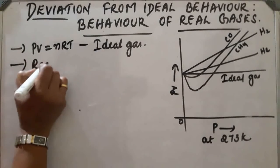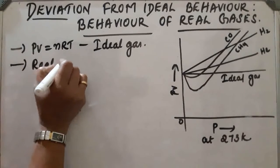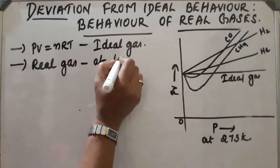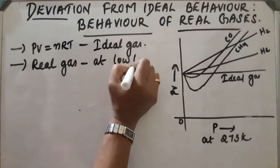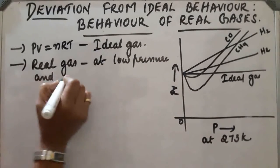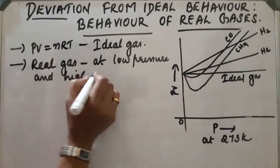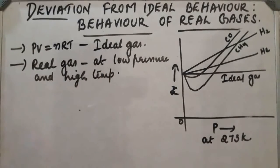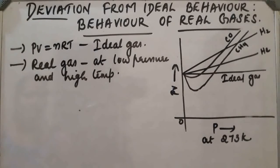Actual gases or real gases obey ideal behavior only at low pressure and high temperature. As the pressure increases or temperature decreases, more and more deviation from the ideal gas equation can be observed.